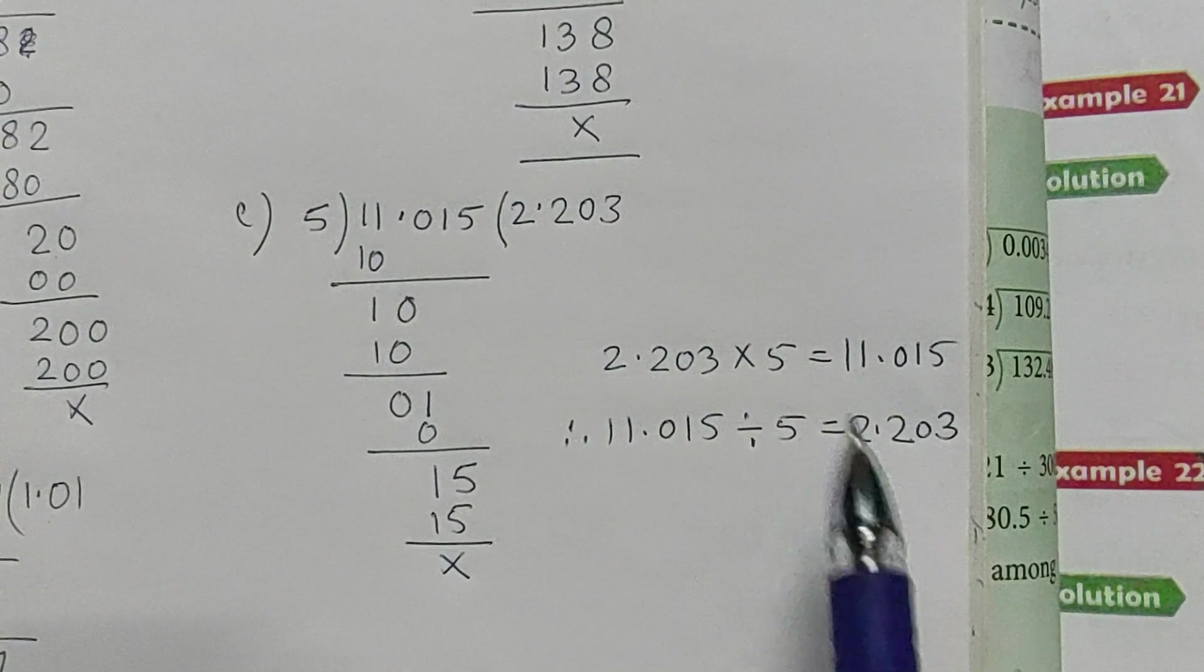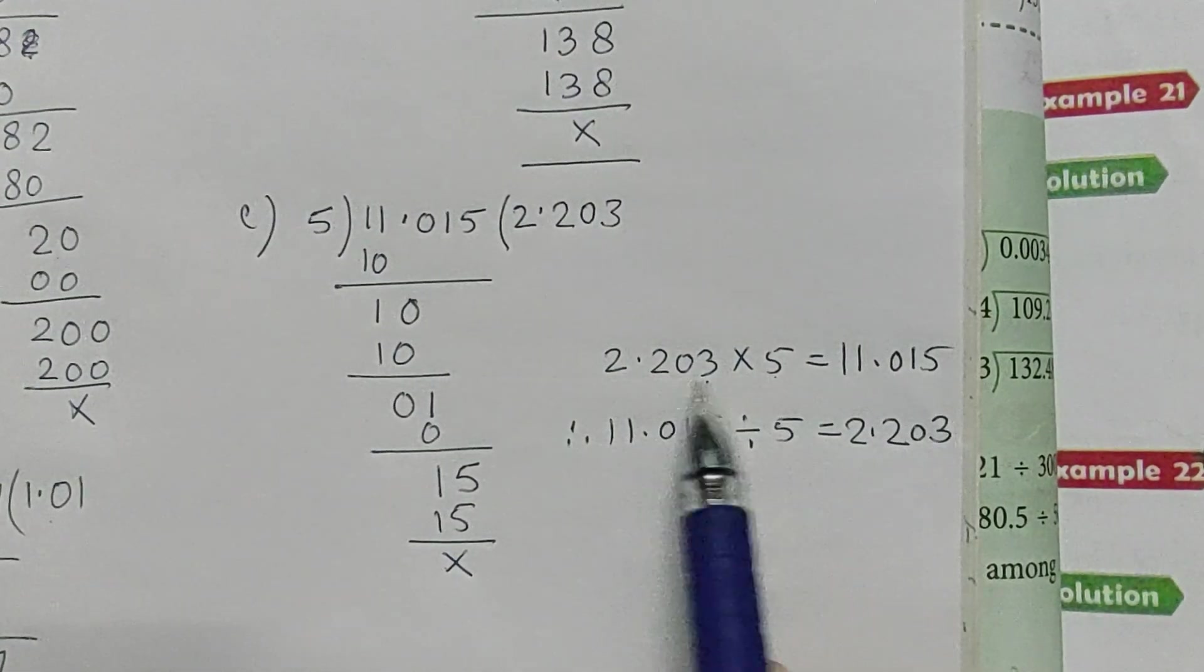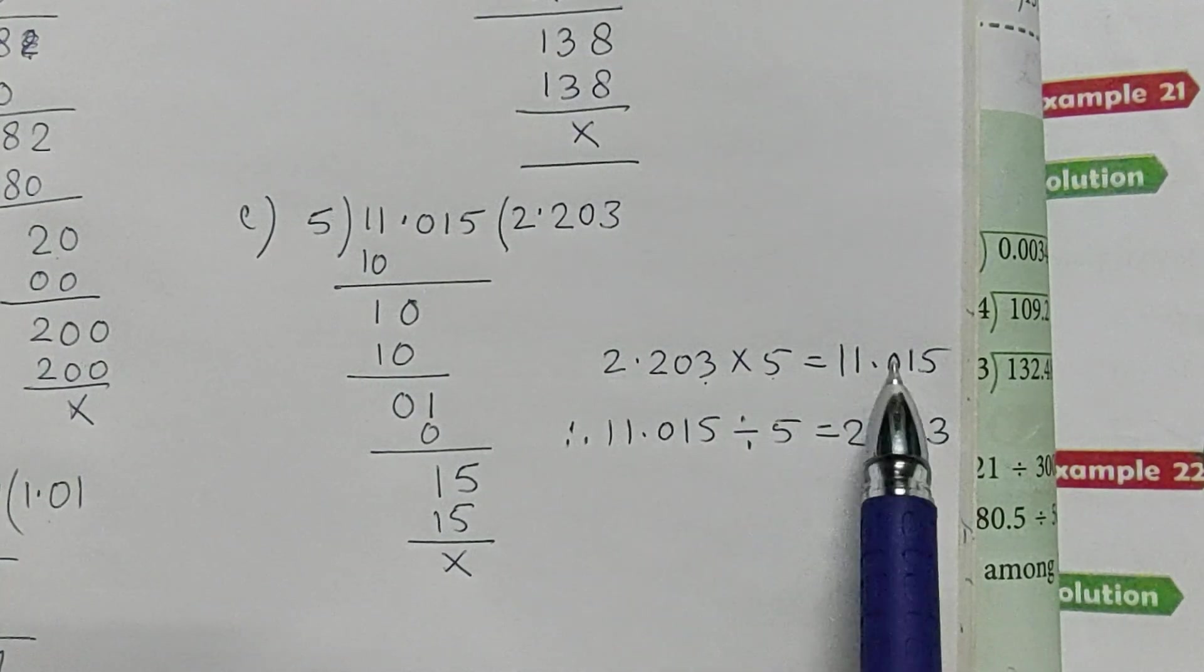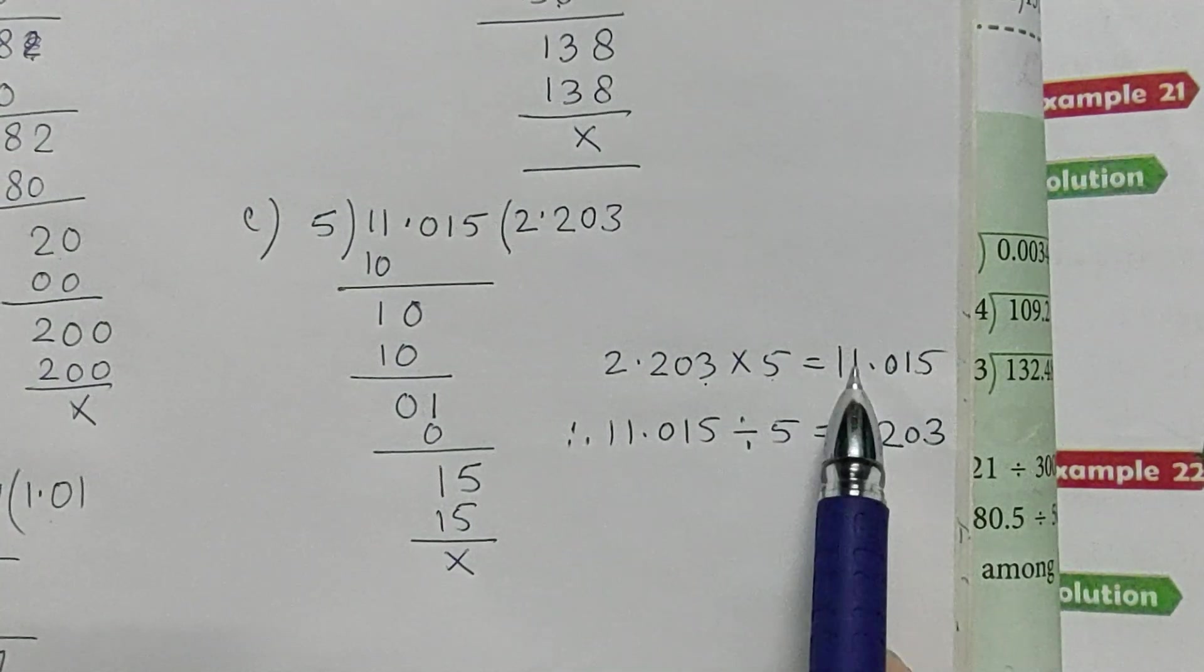Okay, by multiplying you can also check. 5 into 3 is 15, 5 into 0 is 0, 5 into 2 is 10. 10's zero, carry 1. 5 into 2 is 10 and 1 is 11.